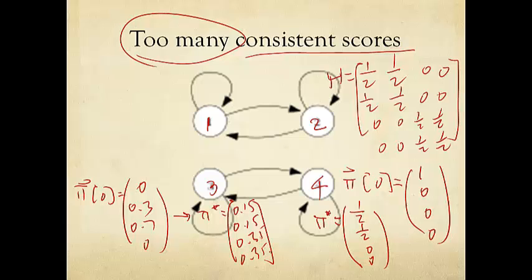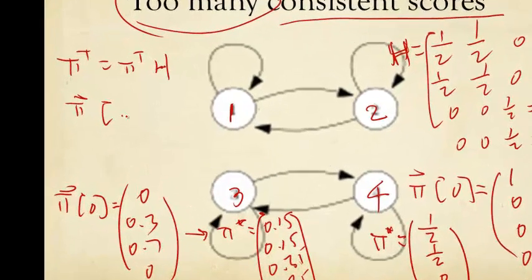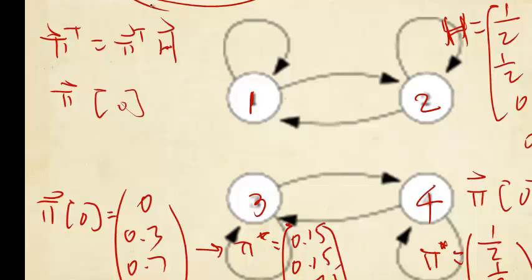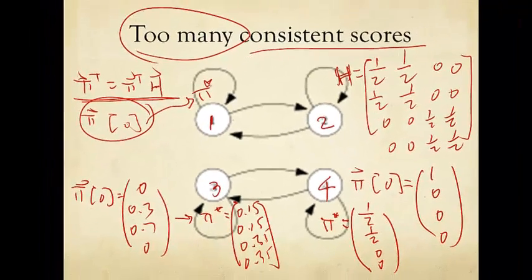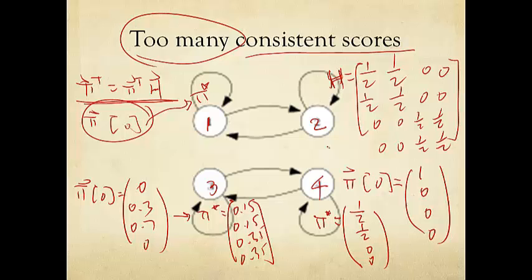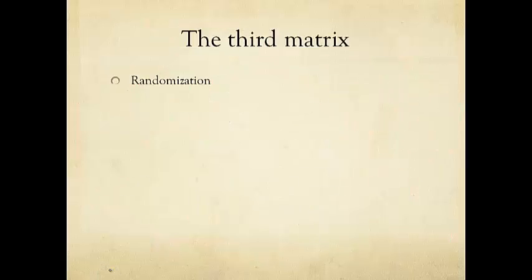So what we really want is to say that if you give me a matrix, and I keep doing the iteration — pi transpose equals pi transpose — whatever matrix it might be, H or H-hat, starting from any initialization vector pi(0), it should be able to converge, meaning that after sufficiently many rounds, I can be arbitrarily close to a particular fixed vector pi star. But this example shows that that may not always be the case. So here is a possible solution.